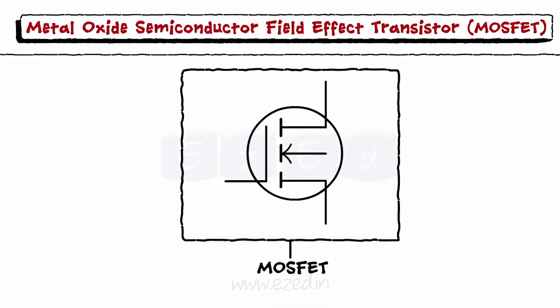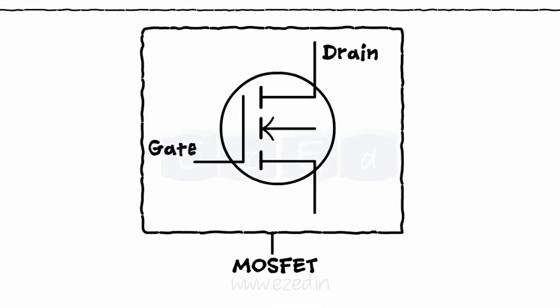MOSFET has also four terminals as gate, drain, source and body. But the body terminal is always connected to the source. So the MOSFET is considered as a three terminal device.